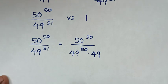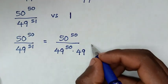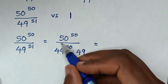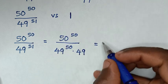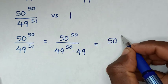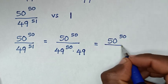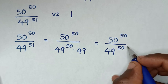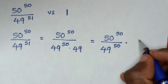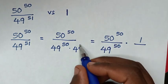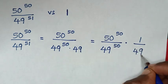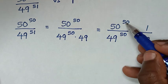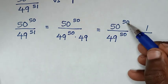Then it will be equal to — we make this exponent divide by this exponent — so it will be 50 power 50 over 49 power 50, then times 1 over 49.